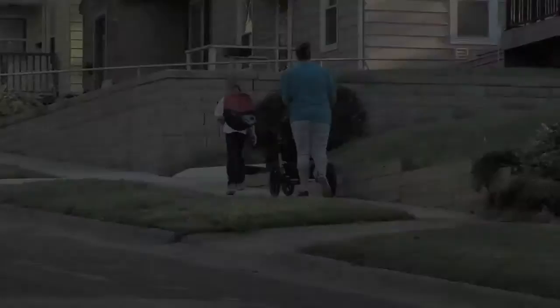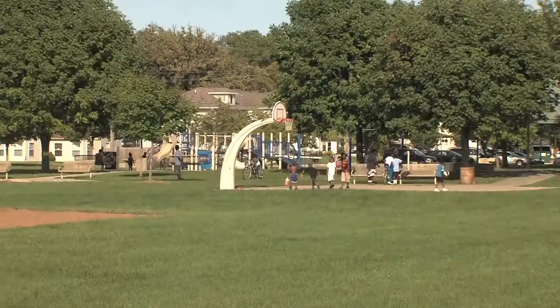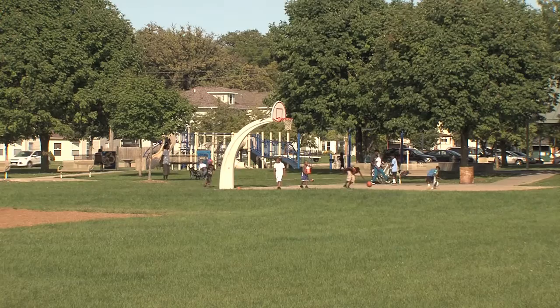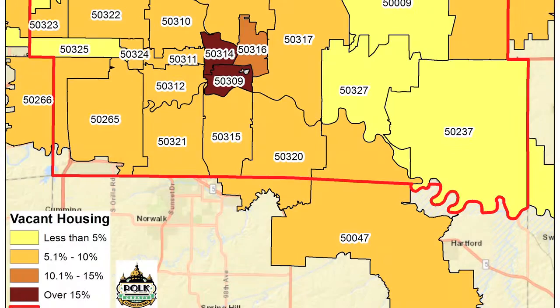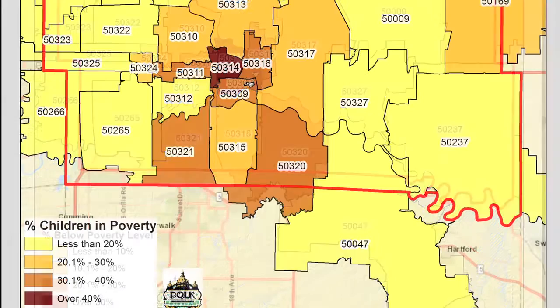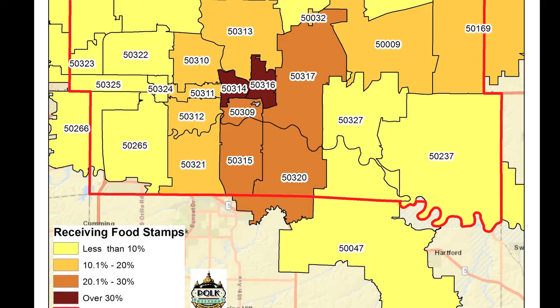We noticed that some zip codes are really struggling in comparison with the rest, so we want to know what's happening there. We know where people live is one of the most important determinants of health. Here in Polk County, there are six zip code regions that rank among the top 10 in a number of negative indicators: unemployment, vacant housing, below poverty, children below poverty, food stamps, and housing burden.